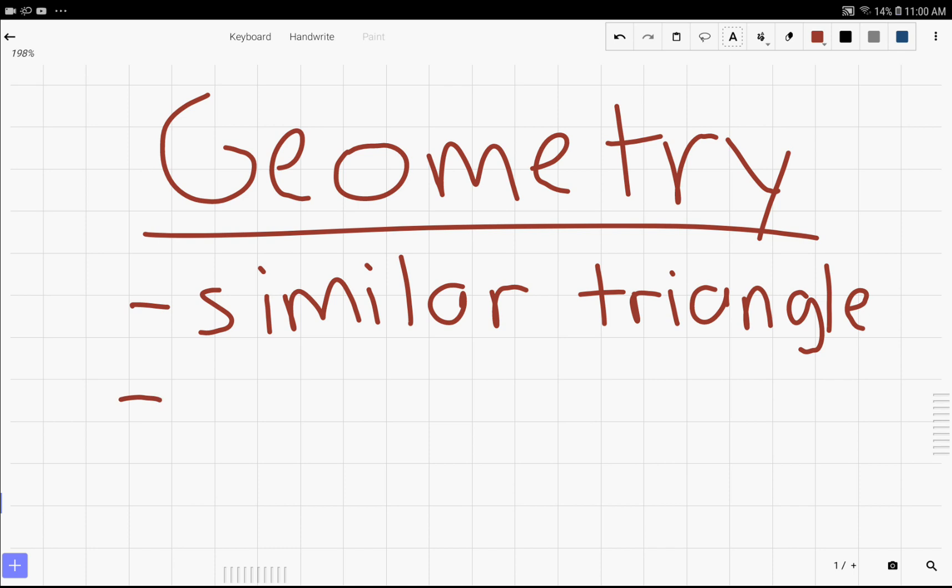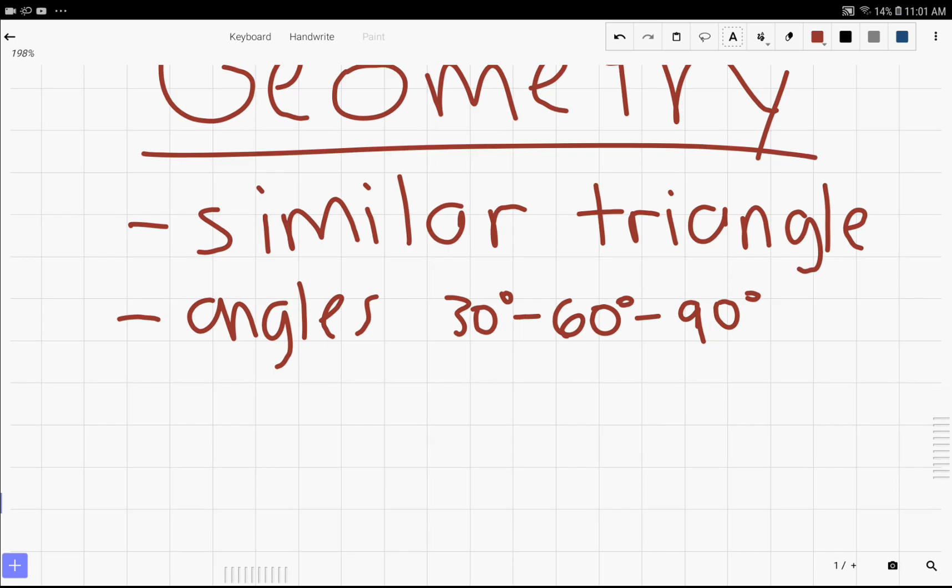Another one is angles. You won't have to really use trigonometry much. One of the things you might have to know is the relationship with a 30-60-90 triangle. There are some other simple principles you'll probably need to know, such as circles and some of those properties about circles.